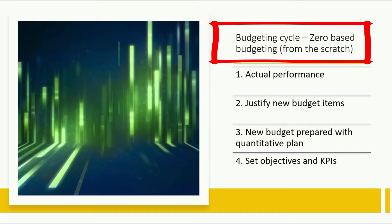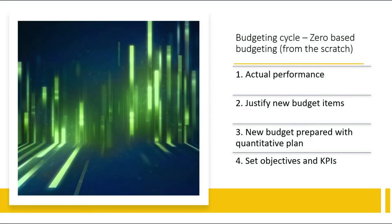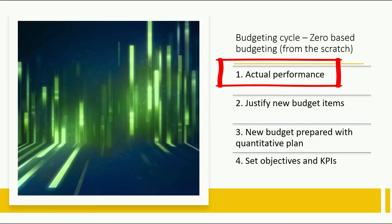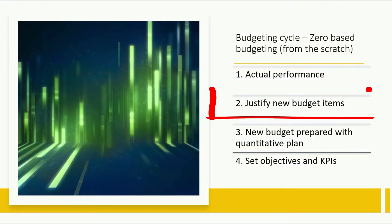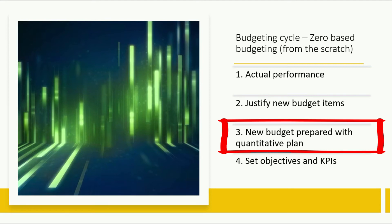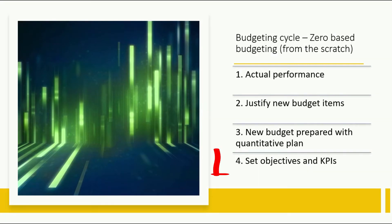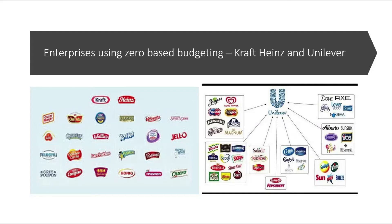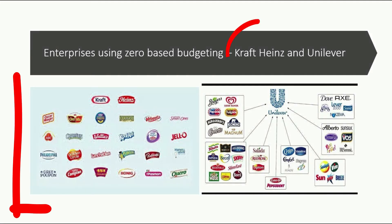Zero-based budgeting is where each item that is included has to be justified. It starts with actual performance, then justifies new budget items. A new budget is prepared with a quantitative plan, and then sets objectives and key performance indicators for the budget plan. Examples of enterprises using zero-based budgeting are Kraft Heinz and Unilever.